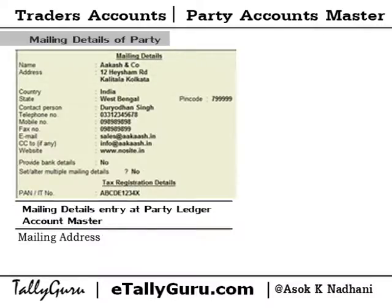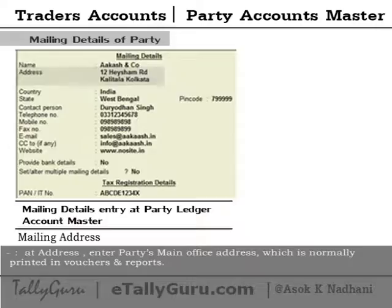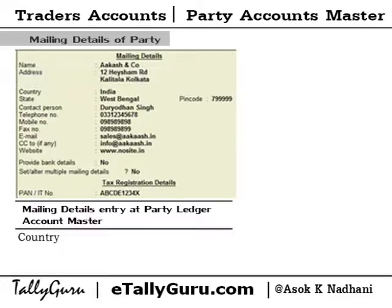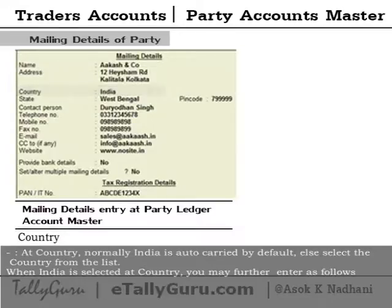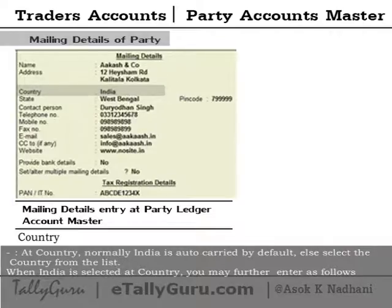Mailing address: at 'Address', enter the party's main office address, which is normally printed in vouchers and reports. At 'Country', India is auto-carried by default. Else, select the country from the list.